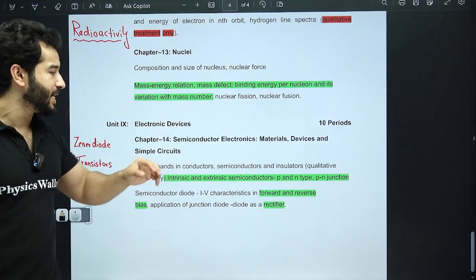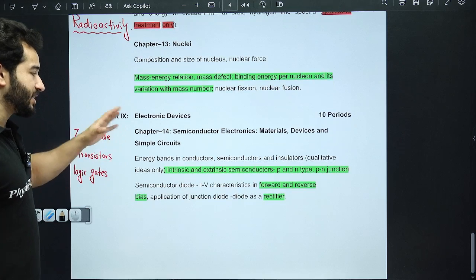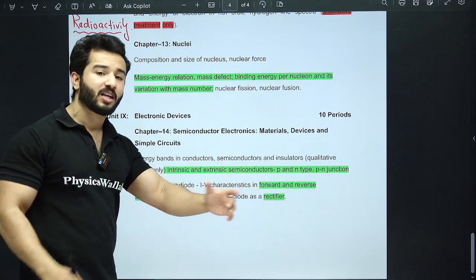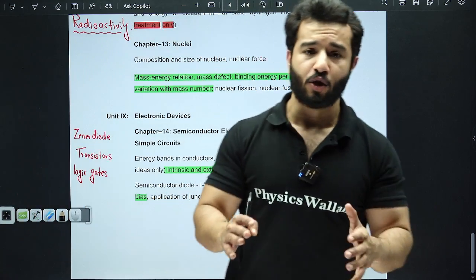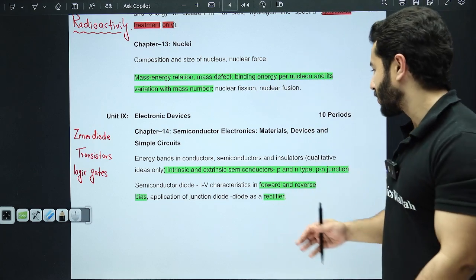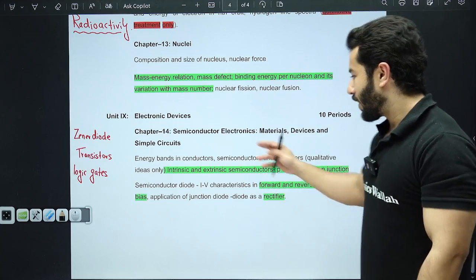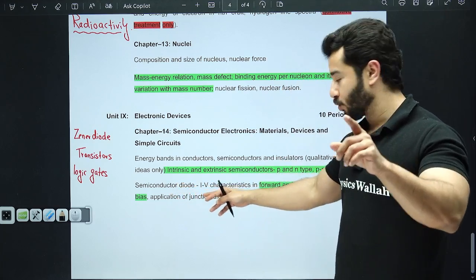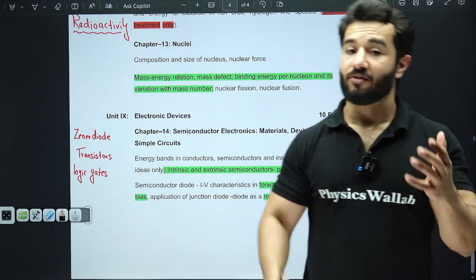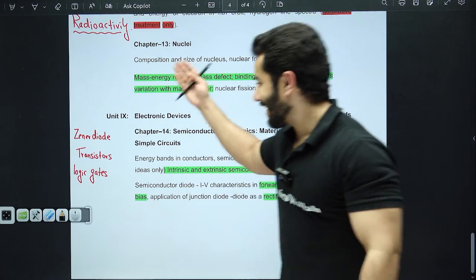Next, mass-energy relation, mass defect, binding energy per nucleon and its variation with mass number—and that graph in which you have got iron at the peak is important. Electronic devices, which means semiconductor—out of this, intrinsic semiconductor, please understand the theoretical part of it. You may be asked to actually explain how does a p-n junction work. Other than that, forward reverse bias is important. Do the graph also. And the only application of p-n junction, that is rectifier, extremely important.